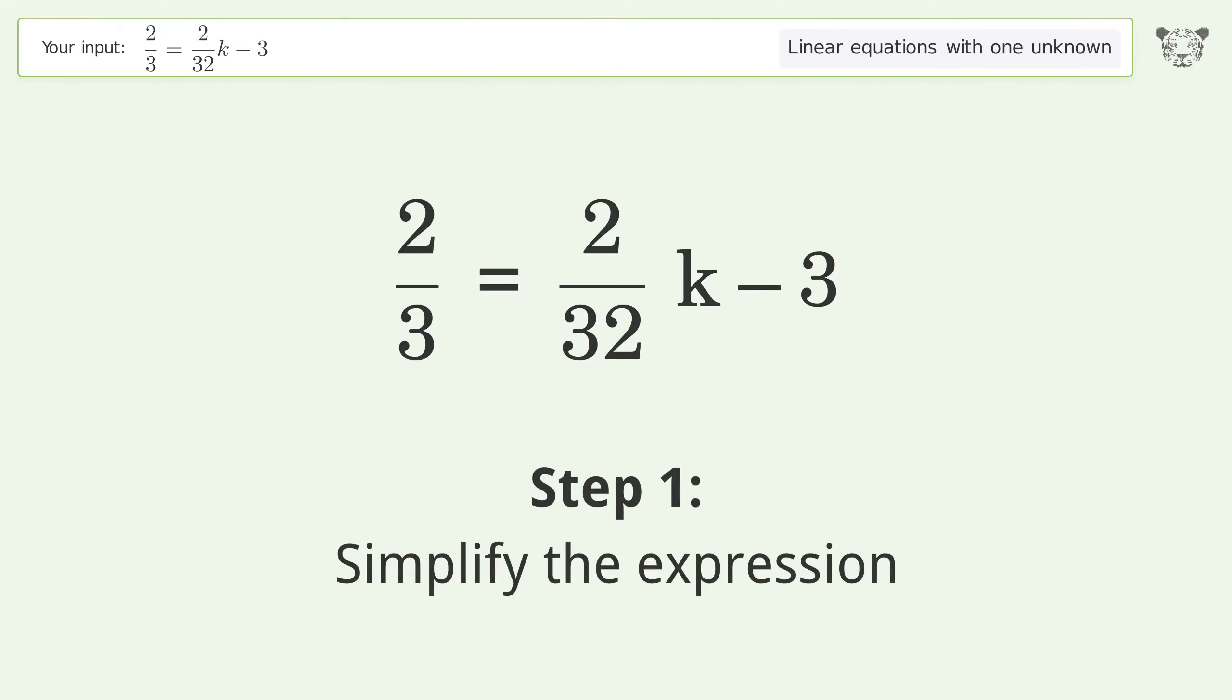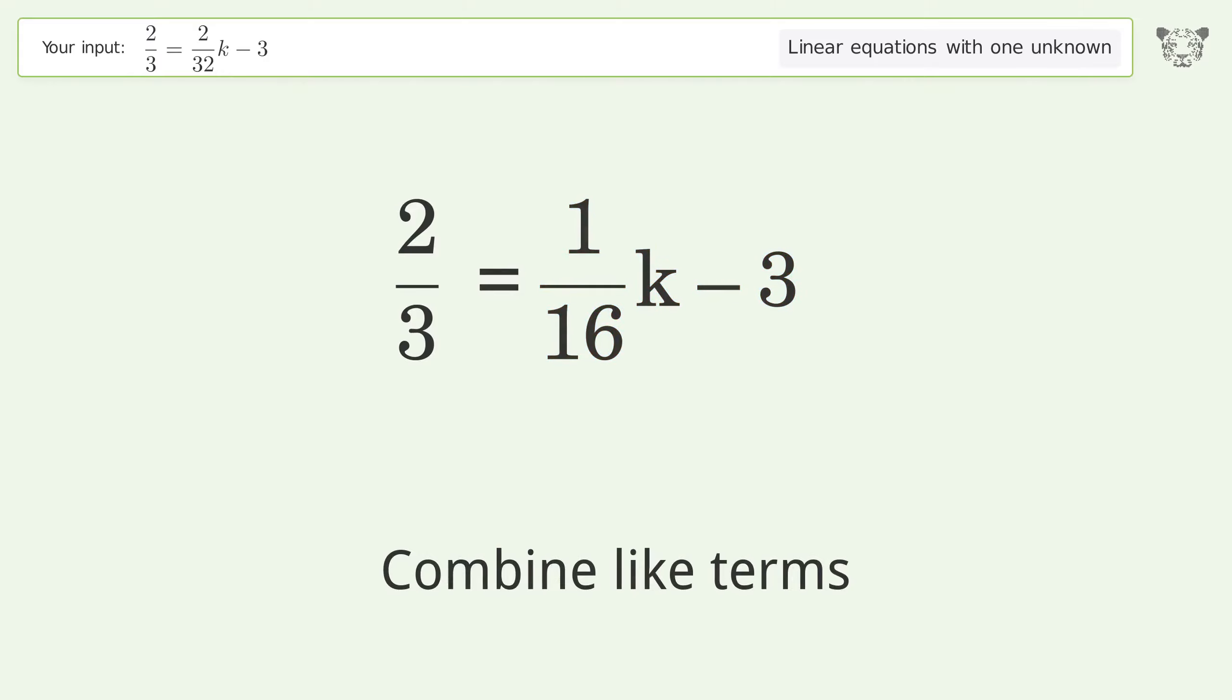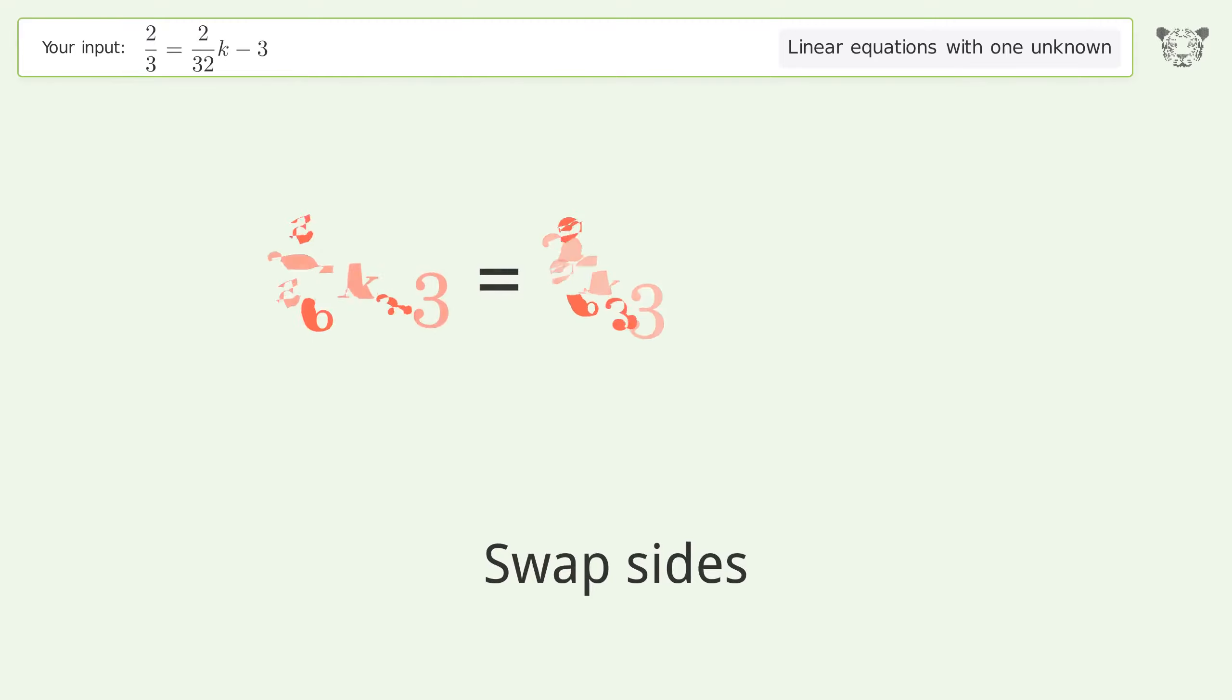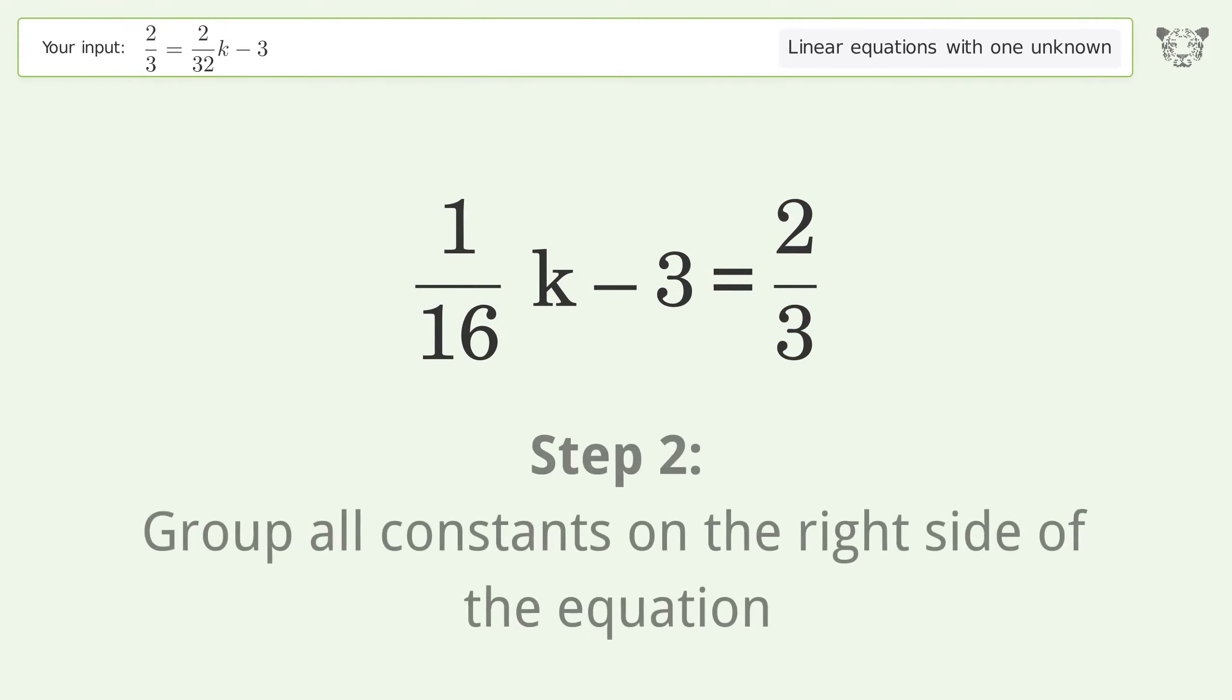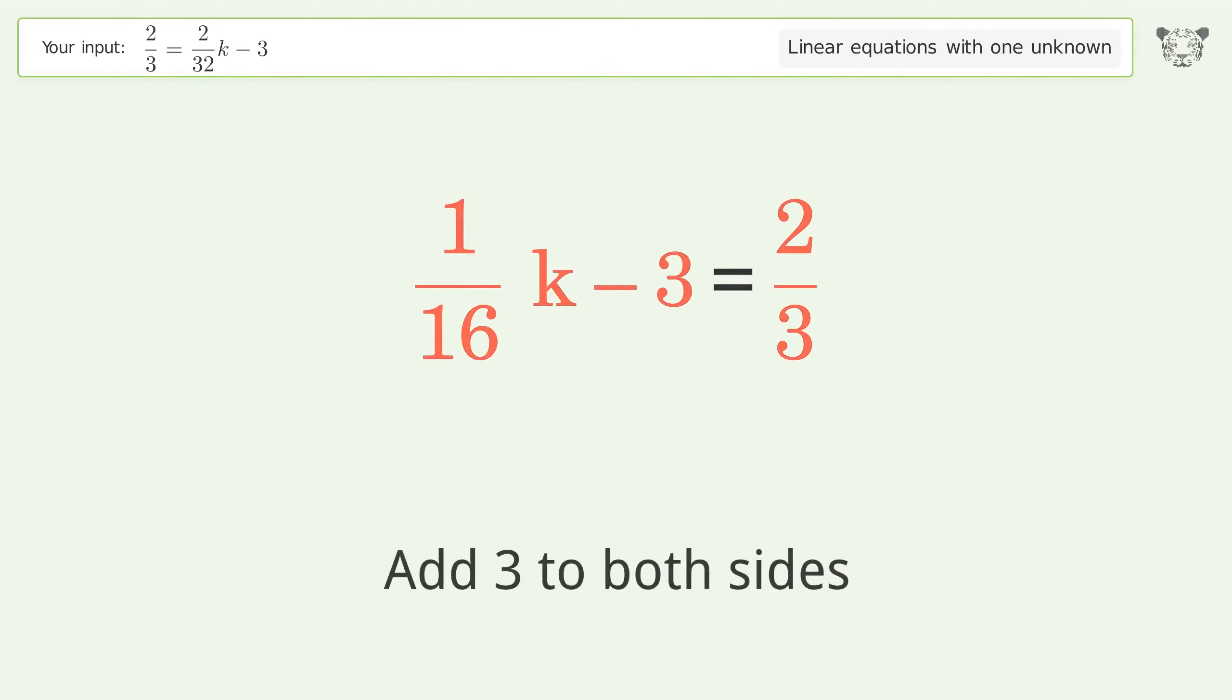Simplify the expression, combine like terms. Swap sides. Group all constants on the right side of the equation. Add 3 to both sides.